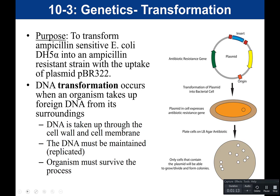Transformation is where an organism takes up naked DNA from outside of its environment. For transformation to occur, DNA has to be taken up through the cell wall and cell membrane — getting the DNA into the bacterial cell. A plasmid is a small extra-chromosomal piece of DNA that replicates independently of the bacterial chromosome. It has an origin of replication and, in this case, an antibiotic-resistance gene — specifically the ampicillin-resistance gene.